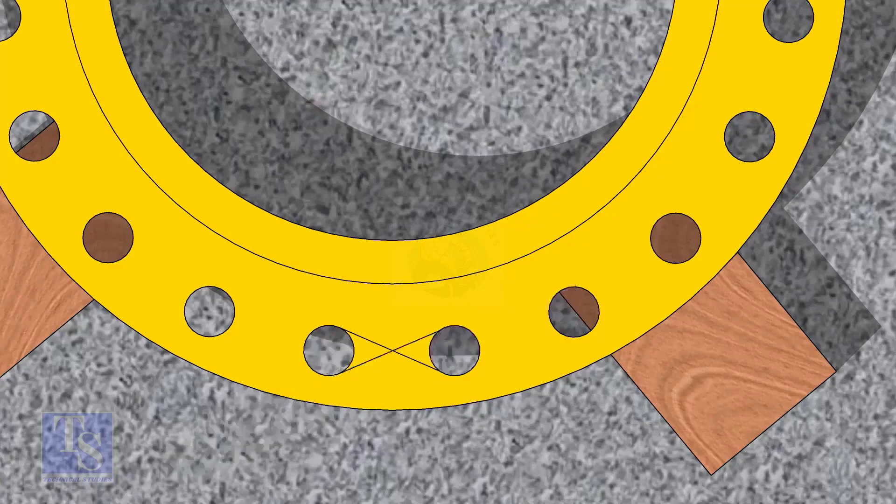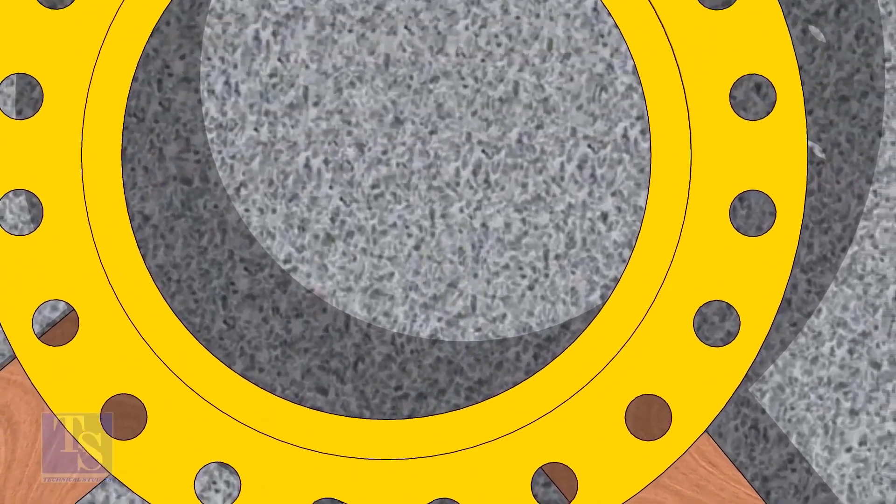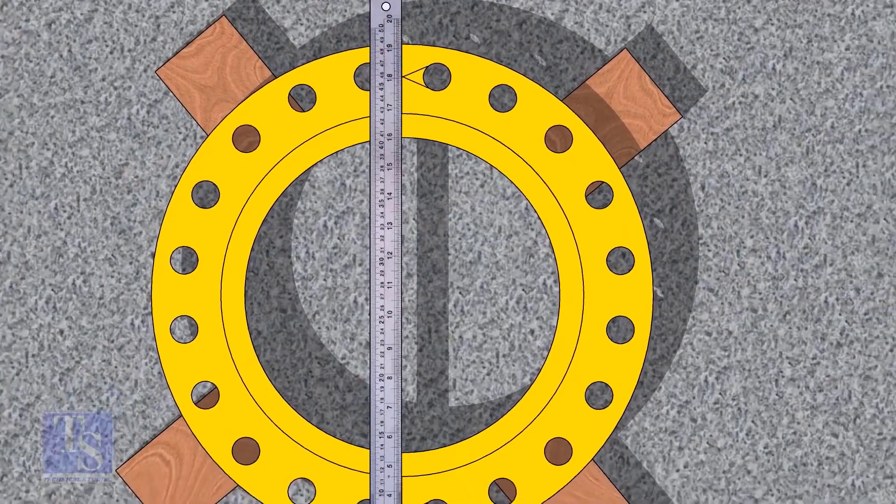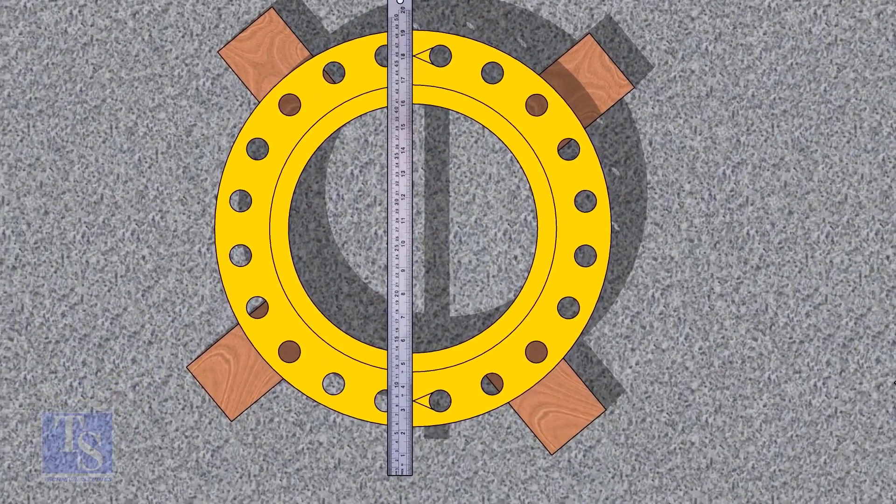Draw the center of the two holes on the opposite side. Draw the center line of the flange as shown.